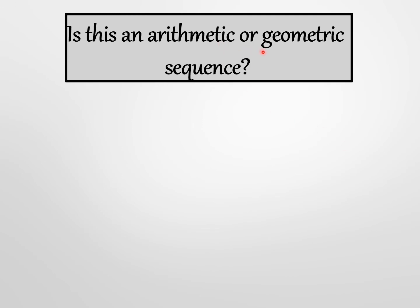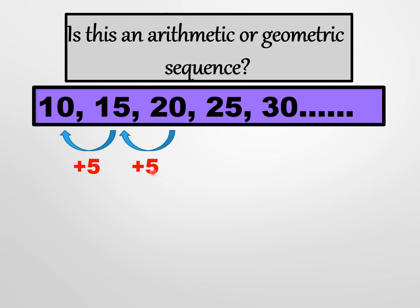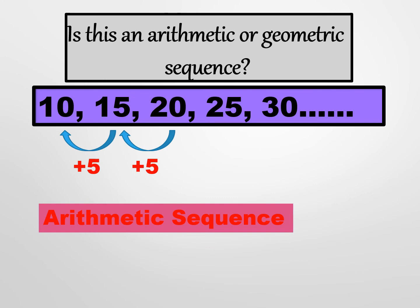Now that we've learned both arithmetic and geometric sequences, let's identify a given sequence. First example: 10, 15, 20, 25, and 30. The increase is gradual, so this looks arithmetic. Let's verify: 15 minus 10 equals 5, 20 minus 15 equals 5, 25 minus 20 equals 5, and 30 minus 25 equals 5. Since we have a common difference of 5, this sequence is arithmetic.